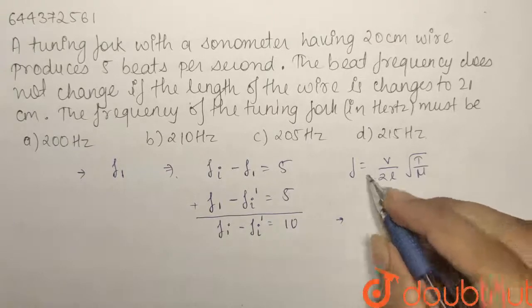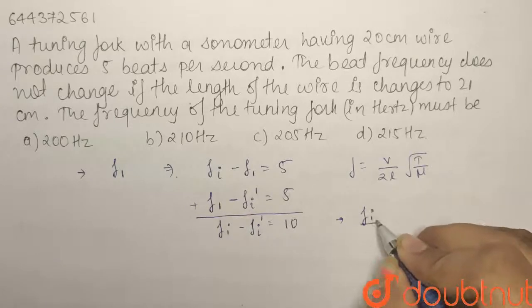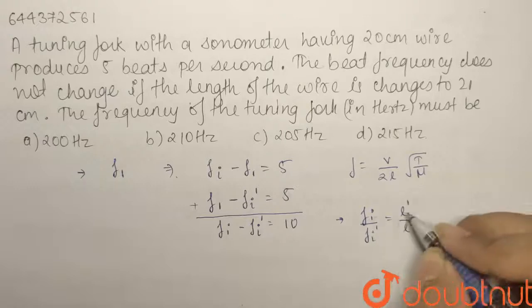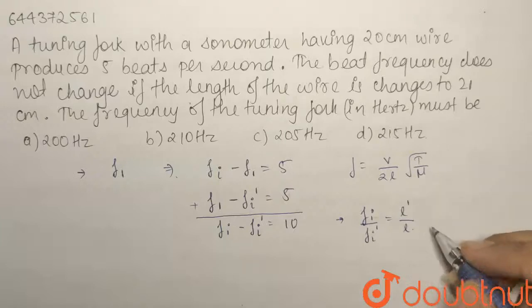Now we know that frequency and length are inversely proportional. So we can write fi by fi dash equals l dash by l. L dash is 21 and l is 20, so it is 21 by 20.